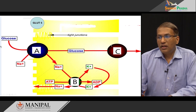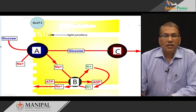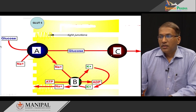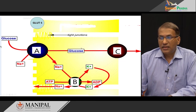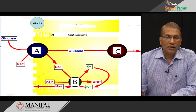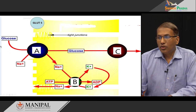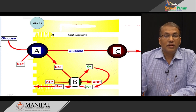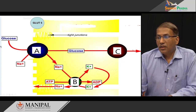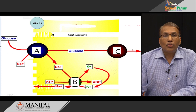Now we come to the C molecule in the diagram. C is one more facilitated transport system called GLUT2. Whenever there is too much glucose in the intestinal cell, it starts pushing glucose into the blood. But since like GLUT5 this also has saturation kinetics, at one point it reaches a saturation level and no more glucose can enter the system. This is very important because it prevents the rapid influx of glucose even though there is a very high concentration of glucose in the intestinal cell.